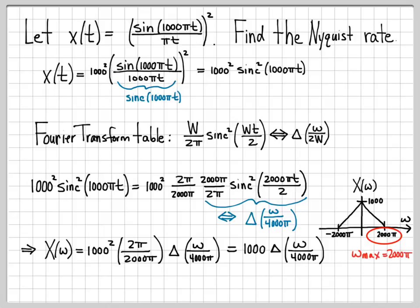Now I can easily pick off what the max frequency is. The maximum radial frequency is two thousand pi. I can convert this to the Nyquist rate by simply multiplying by two. So the Nyquist rate is just two times omega max, which is two times two thousand pi, which is four thousand pi.